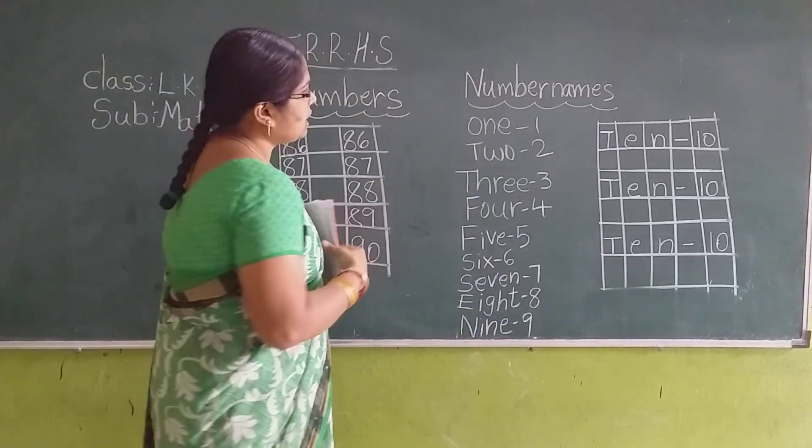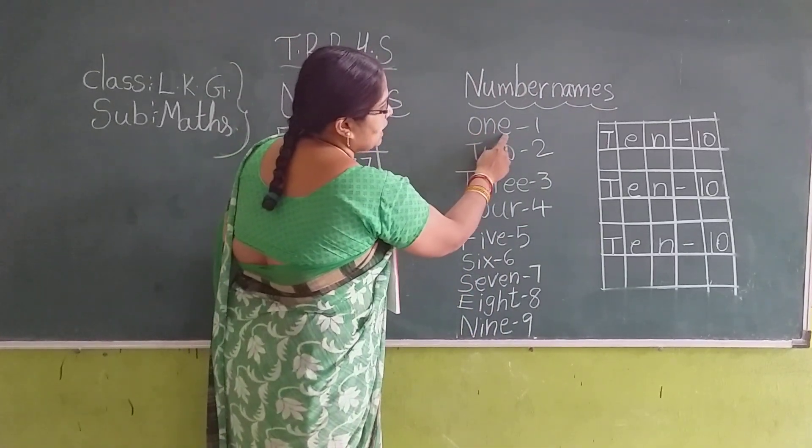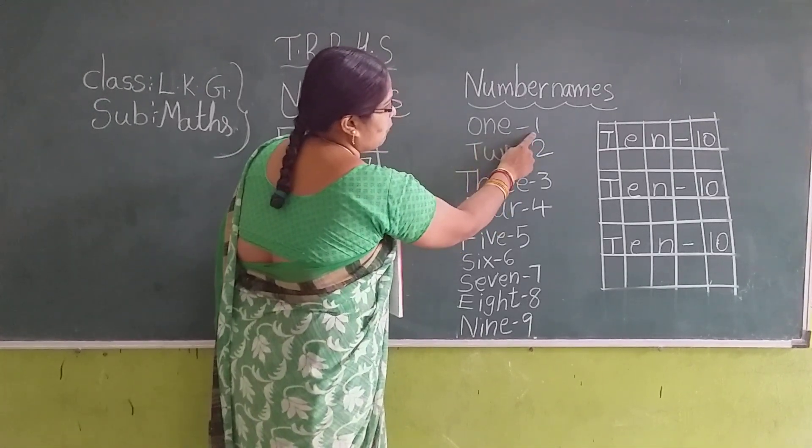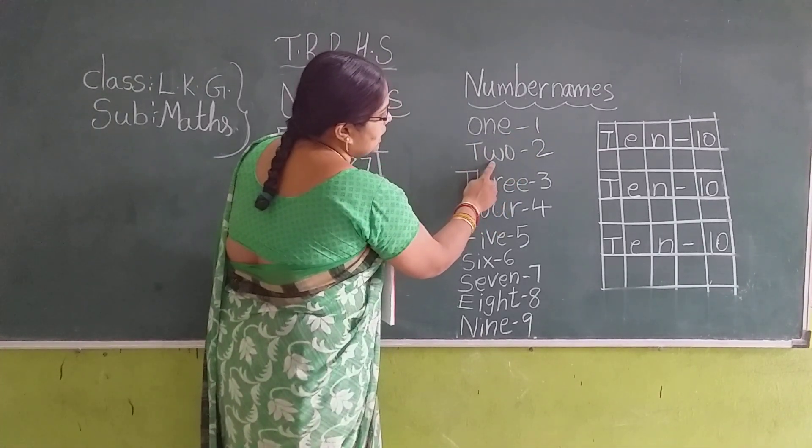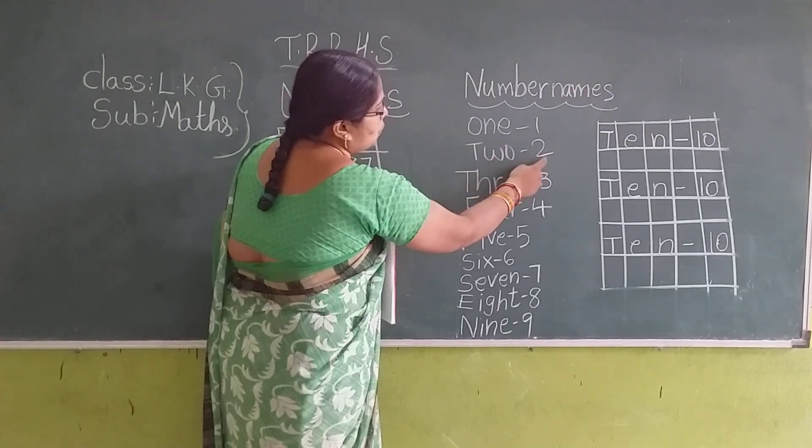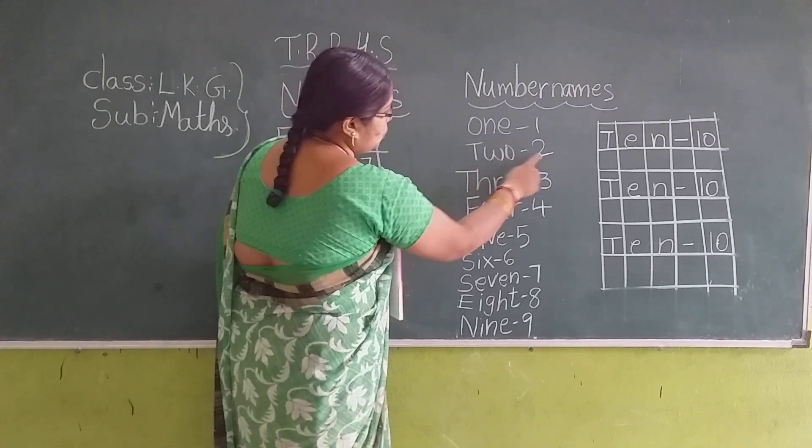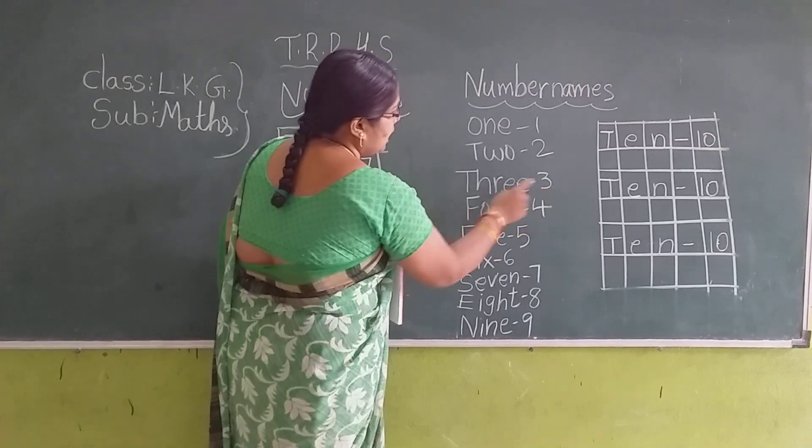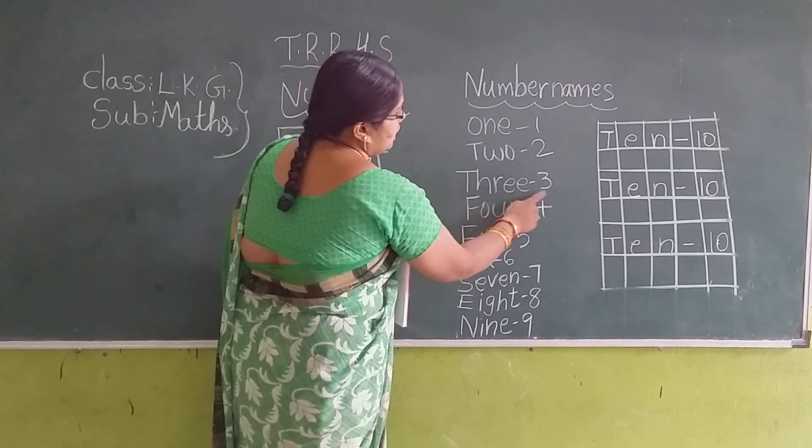Okay, now we repeat the number names once. O, N, E, one. Read after me children. O, N, E, 1. T, W, O, 2. T, W, O, 2. T, H, R, E, E, 3. T, H, R, E, E, 3.